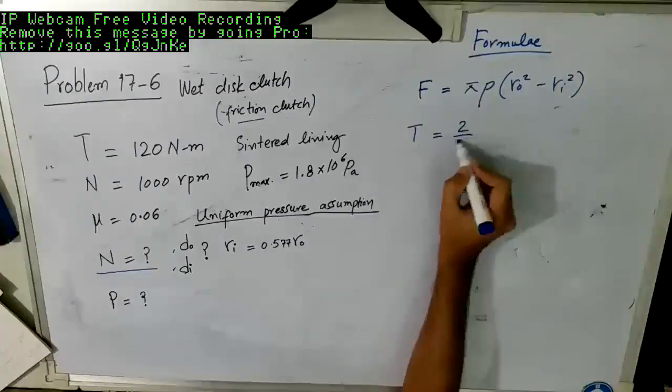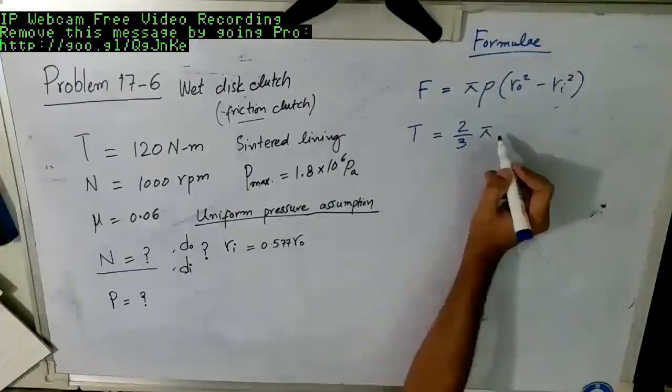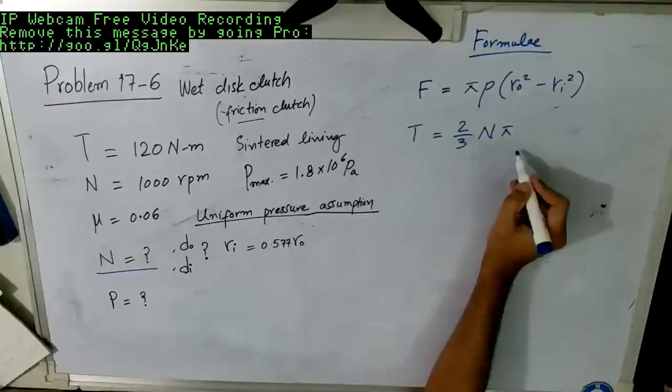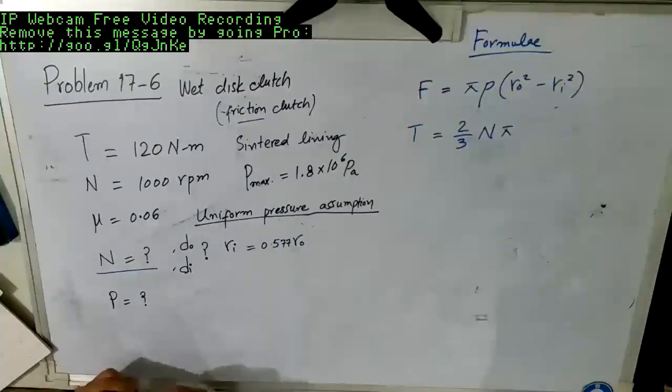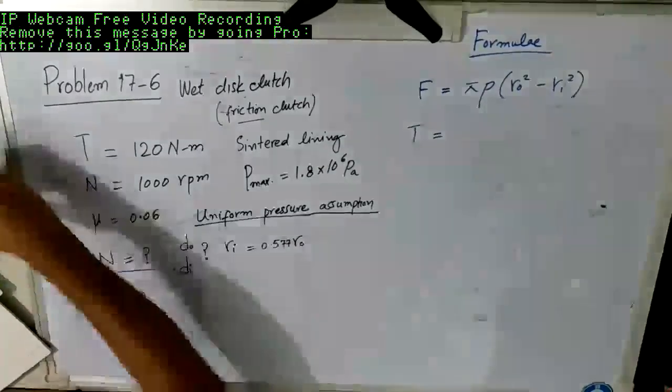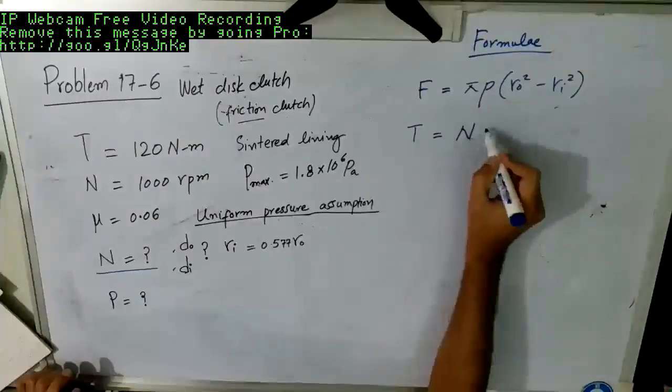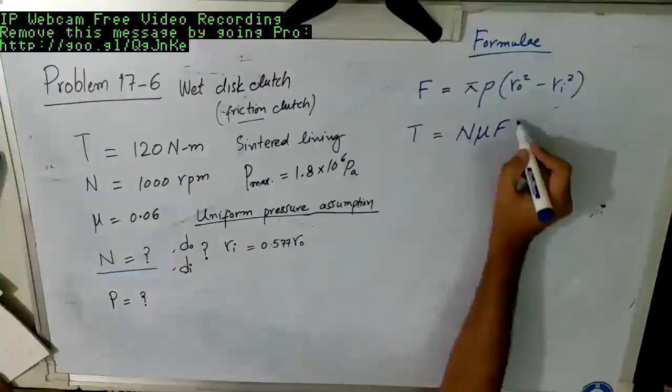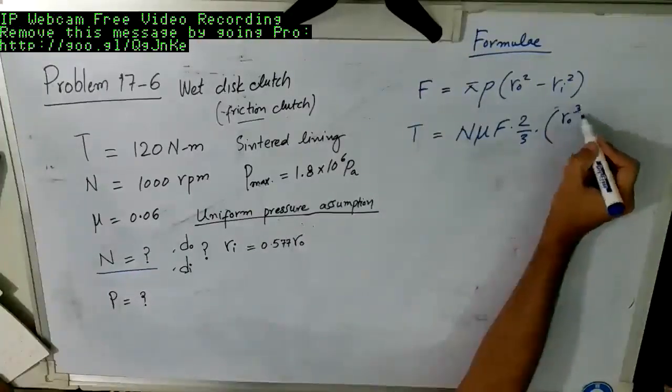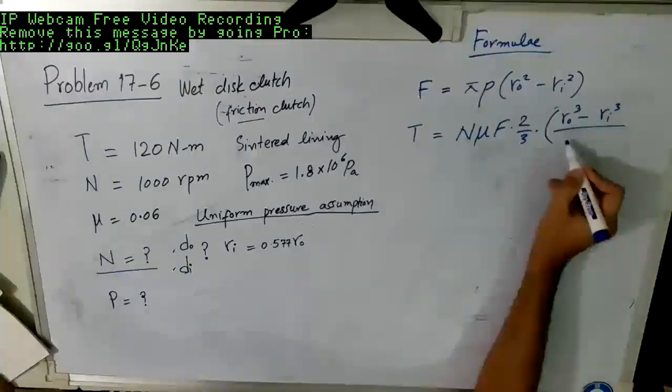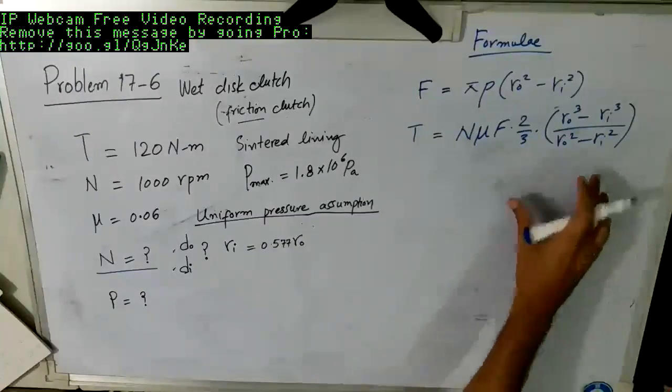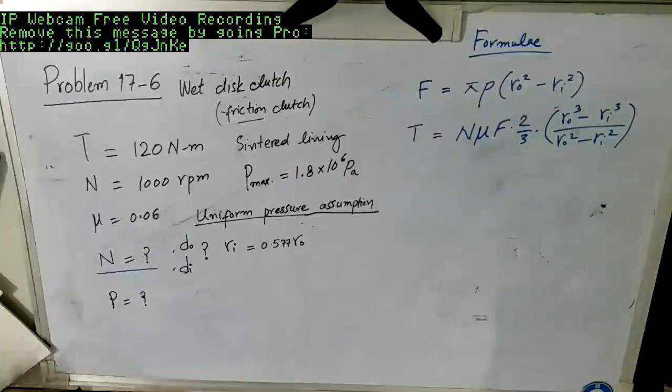Then the torque, which we are given with, the torque transmitted depends upon... So we should actually write the final form of this formula. The final form of this formula was N mu F and then we add multiplication by 2 by 3.